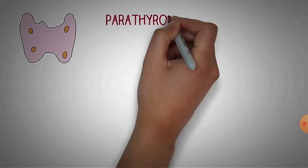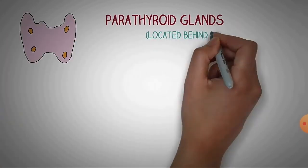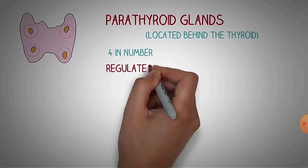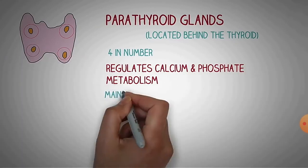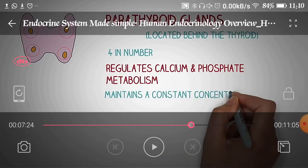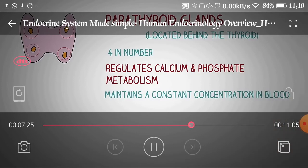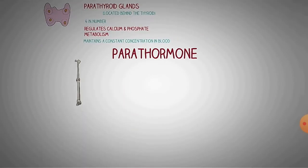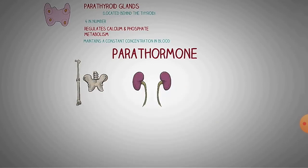The parathyroid hormone, also called PTH or 'parrot hormone,' is located just behind the thyroid in four tiny structures. They produce parathyroid hormone, which regulates the levels of calcium and phosphate metabolism and maintains a constant concentration in the blood.